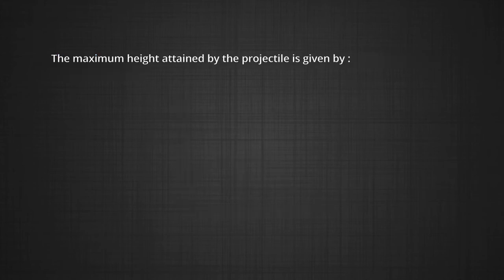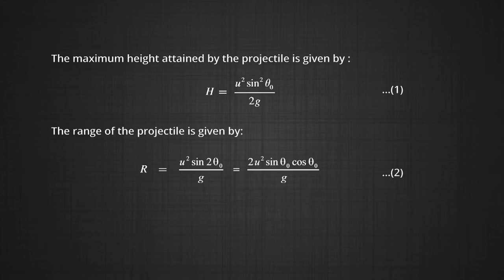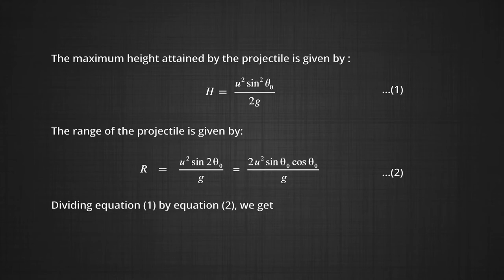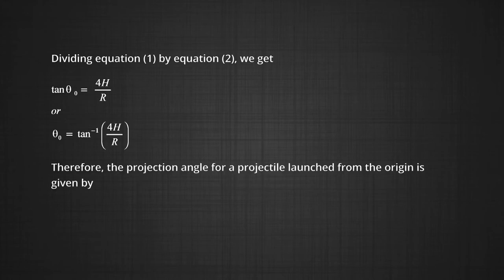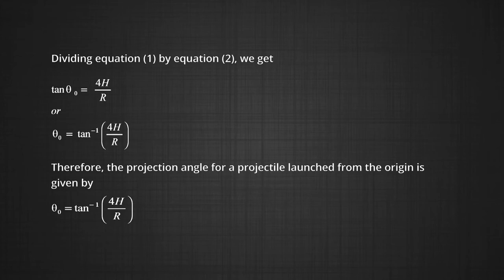The maximum height is h = U²sin²θ₀ / 2g (equation 1) and R = U²sin2θ₀ / g = 2U²sinθ₀cosθ₀ / g (equation 2). After dividing equation 1 by equation 2, we get tanθ₀ = 4h/R, or θ₀ = tan⁻¹(4h/R). Therefore the projection angle for a projectile launched from the origin is θ₀ = tan⁻¹(4h/R). Hence it is proved.